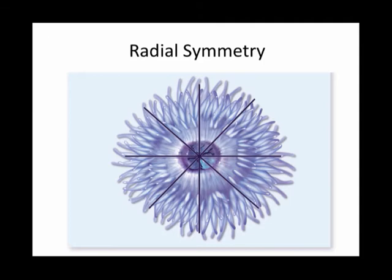Animals that have radial symmetry, like cnidarians, are usually sessile, which means they don't move. Or if they do move, like jellyfish, they don't move very fast and they don't have a clear direction of movement. It's advantageous to have radial symmetry because you can encounter prey from any side. If you don't move, your prey can come from any angle, and you can have predators or threats from any angle as well. So radial symmetry is good for animals that don't move very fast.